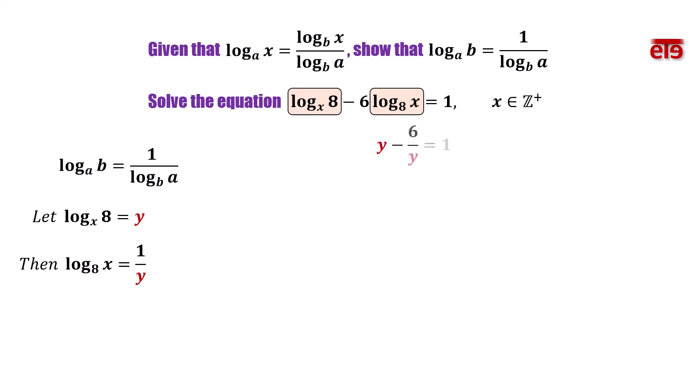Let logarithm of 8 base x equal y. Then y minus 6 over y equals 1, which gives y squared minus y minus 6 equals 0.